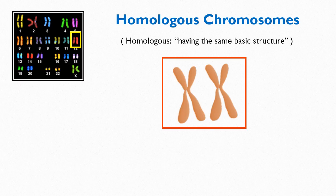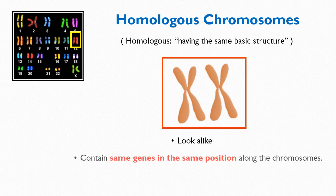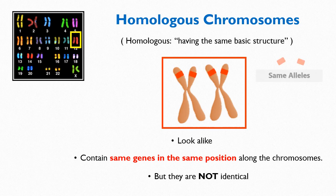Homologous chromosomes look alike. They also contain the same genes in the same positions along the chromosomes. But they are not identical, because each homolog of the pair may contain different versions of any particular gene. Different versions of a gene are called alleles.